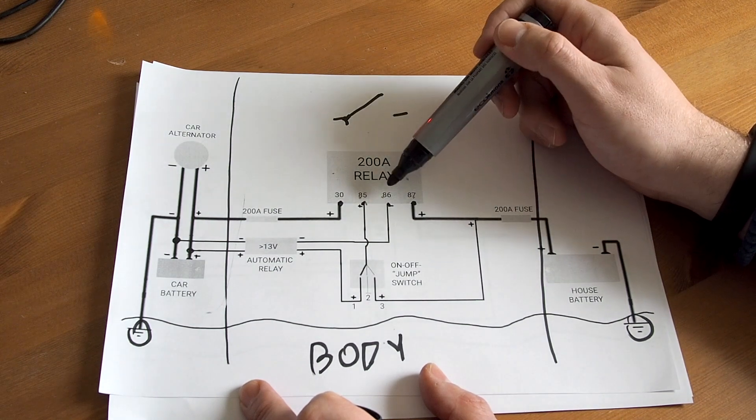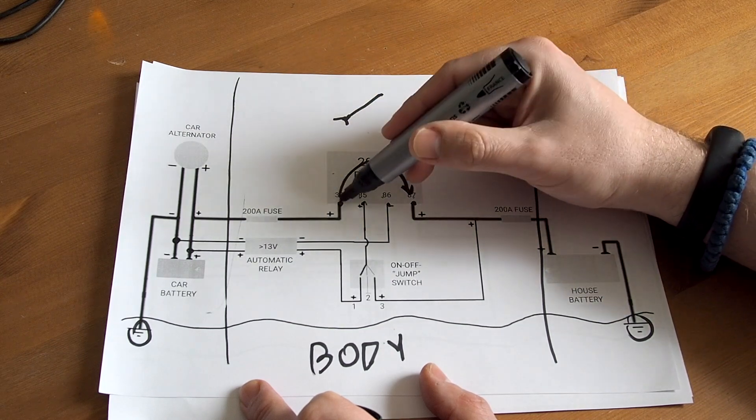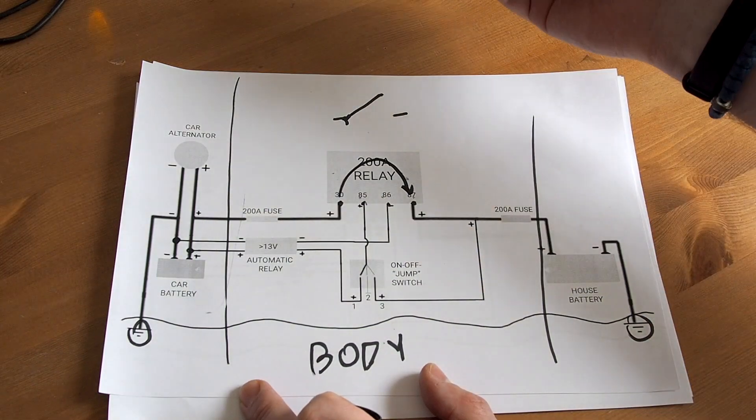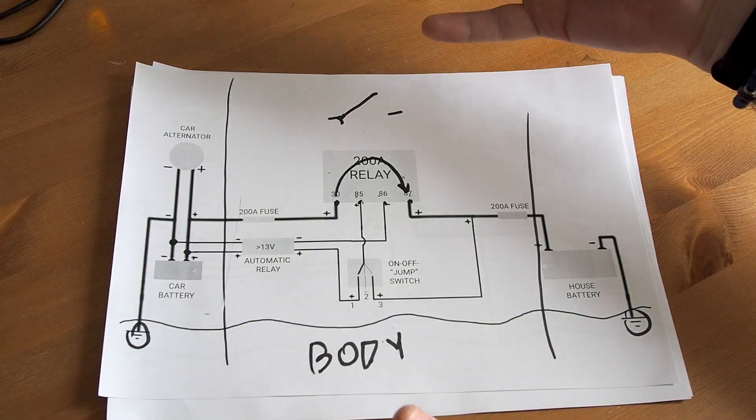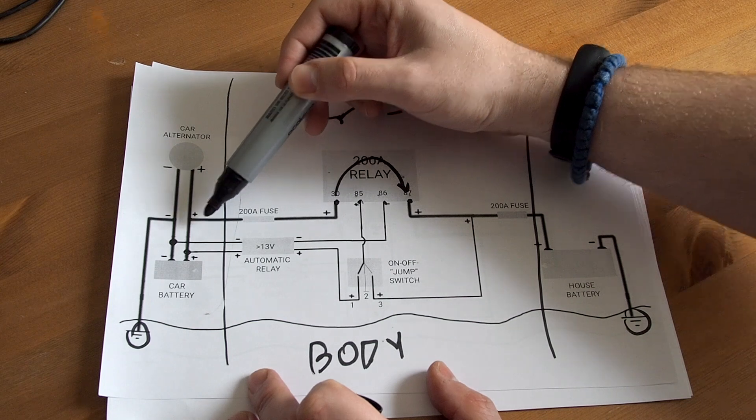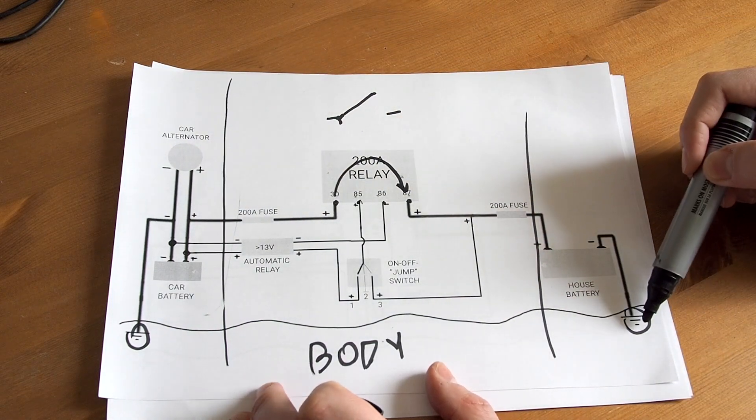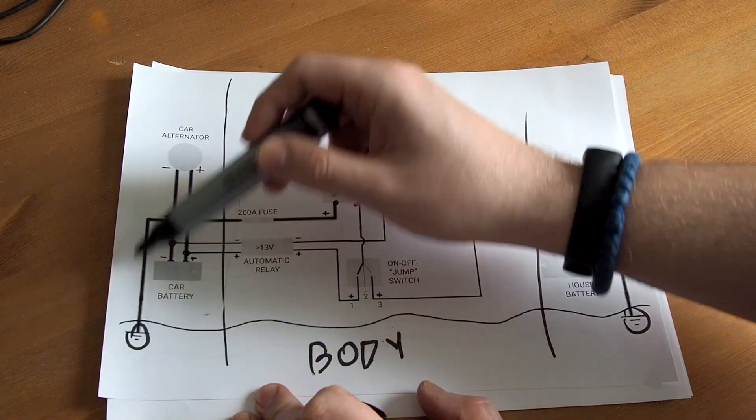So this relay closes and makes the power go through the relay to the house battery. So we have our goal. The power from car alternator goes through the wire, through the relay to your house battery and negative wires are connected through the body of the car. The circuit is complete and your house battery is charging.